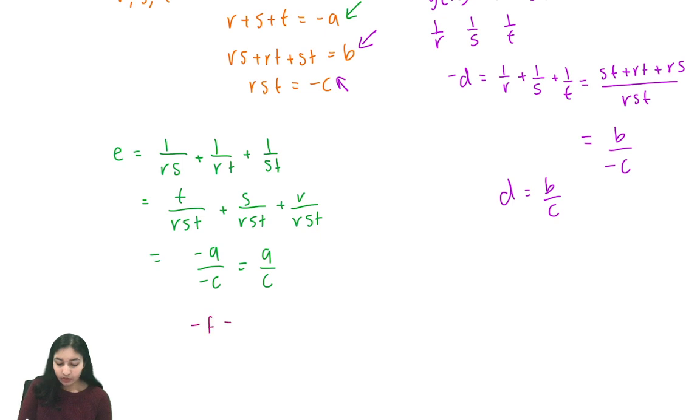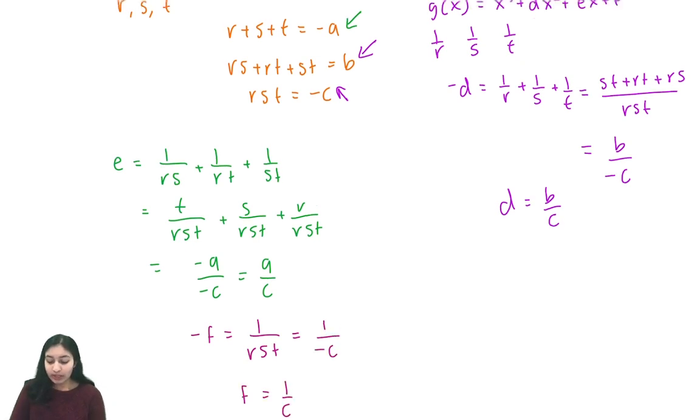Finally we have f. We know negative f is equal to 1/rst, which is just 1 over negative c, so that tells us that f equals 1/c.